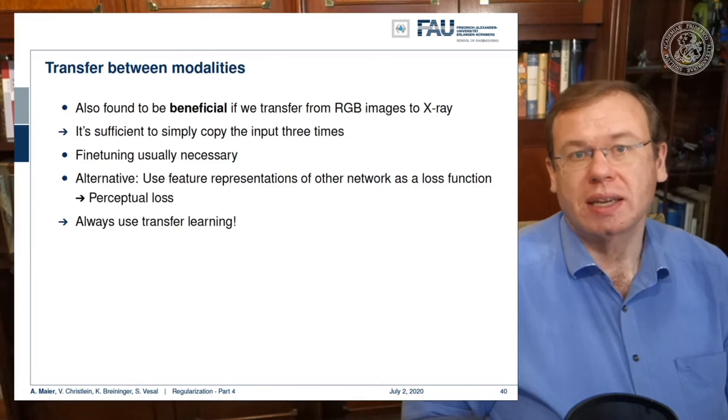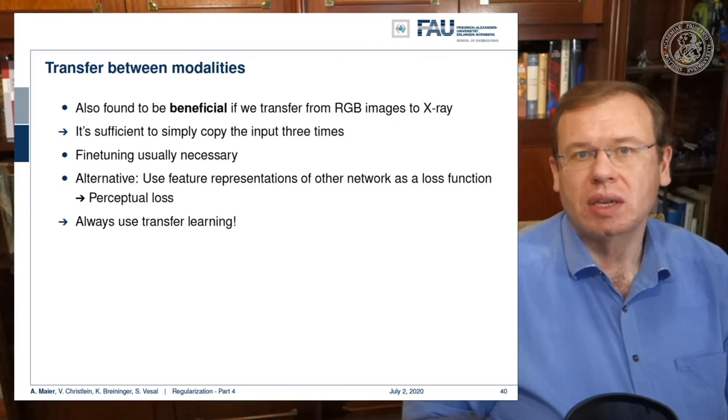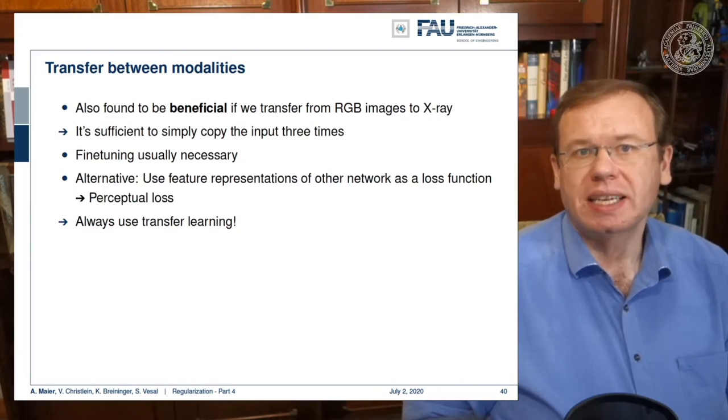There's also transfer between modalities. This was also found to be beneficial. Now you can transfer from RGB images to x-ray and here it's actually sufficient to simply copy the input image three times. Then you don't need that much fine-tuning. One alternative is that you use feature representations of other networks as a loss function. This then leads to perceptual loss. We will talk about perceptual loss in a different video. In any case, transfer learning is typically a very good idea.